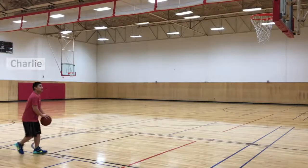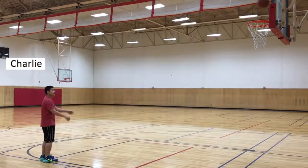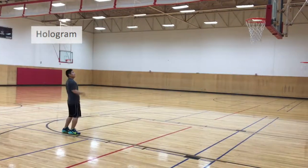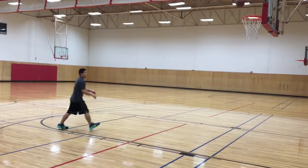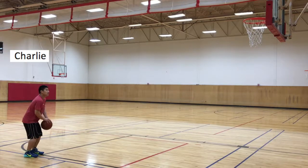Charlie is an intermediate basketball player playing the game of horse against the hologram. As the user is playing horse, the motion sensor technology can track where the user shot from on the court.